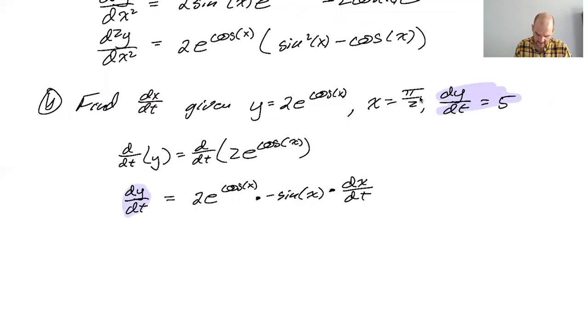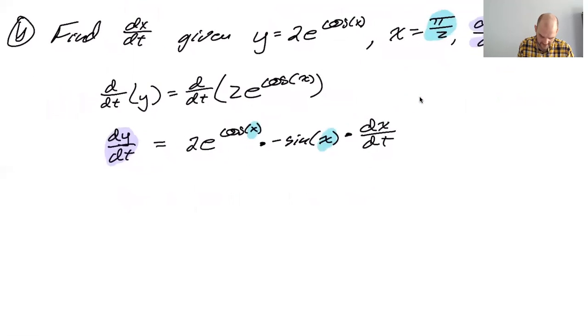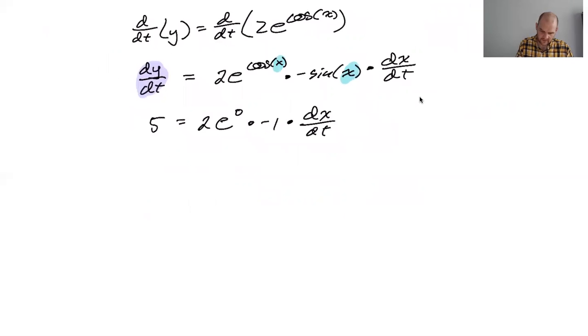I know dy/dt, that's 5, so I'm going to sub this in. dy/dt is 5, I know that x is π/2, so that'll be π/2, and I'm trying to find dx/dt. So I'm going to have 5 is equal to 2 e to the cosine of π/2—cosine of π/2 is zero—times the negative sine of π/2, which is 1, so just times negative 1 times dx/dt. e to the zero is 1, so I believe that dx/dt is going to be negative 5 halves units per second.